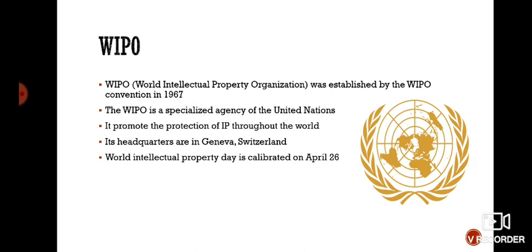Let's just know about WIPO. WIPO is abbreviated as World Intellectual Property Organization. It was born in 1967. It is a specialized agency of the United Nations. It promotes the production of IP throughout the world. WIPO provides IP services that encourage individuals and businesses to innovate and create. The WIPO IP portal is a one-stop shop for global IP services.